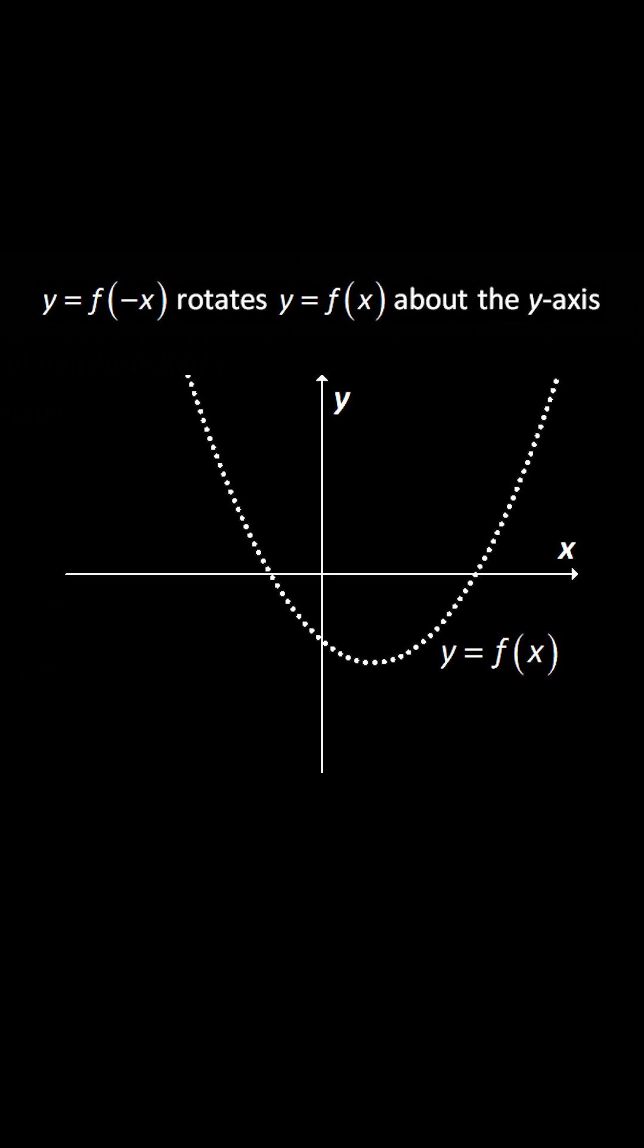Rule one, y equals f negative x rotates the original graph about the y-axis. Rule two, y equals negative f(x) rotates the original graph about the x-axis.